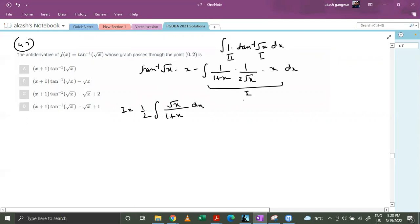So let's take a substitution here: x equals t square. Basically dx equals 2t dt.